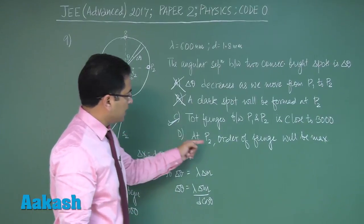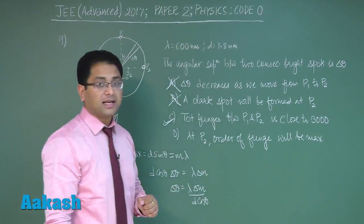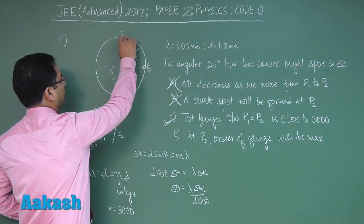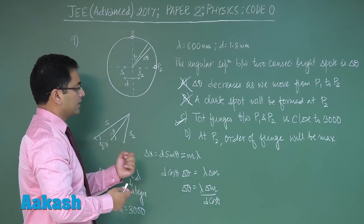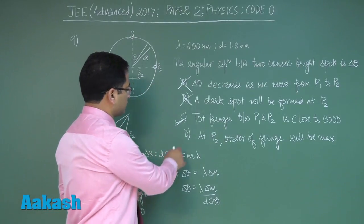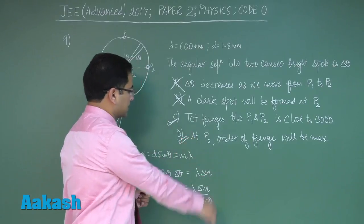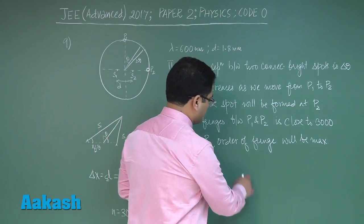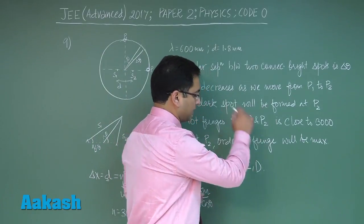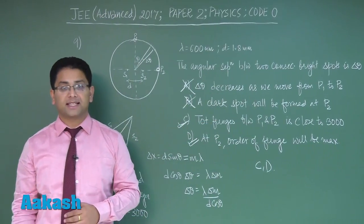And at P2, order of fringe will be maximum, that's right, because after every quadrant by the symmetry the things get repeated, so at P2 the order of fringe will be maximum. D is correct. So for question number 9, the correct options would be C and D. Let's move to the next question, question number 10.